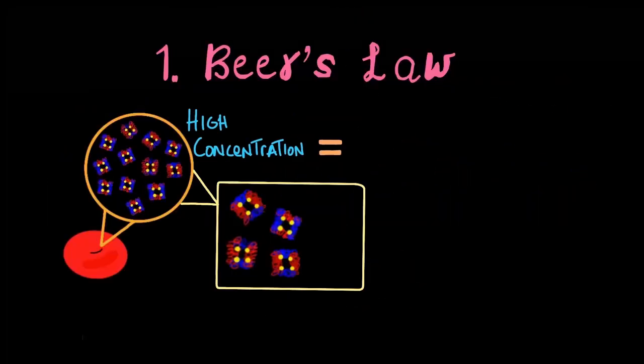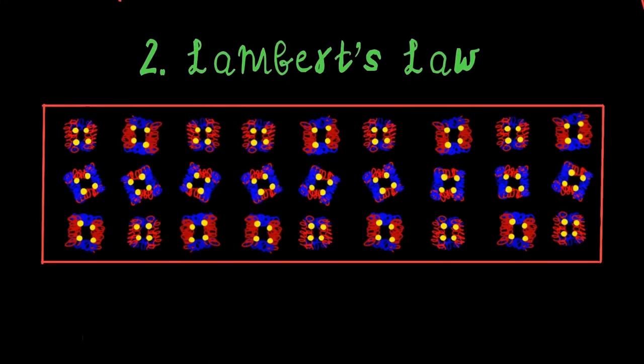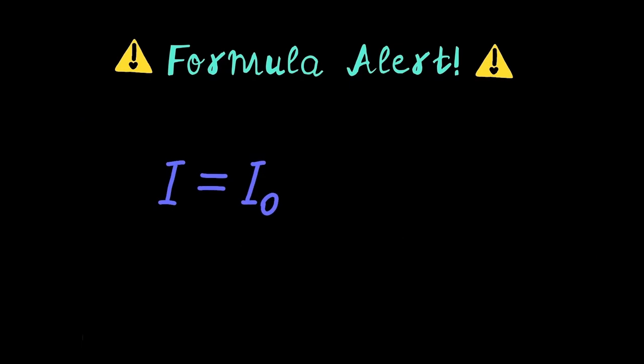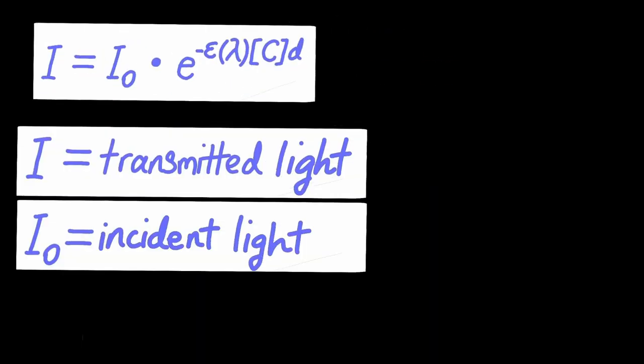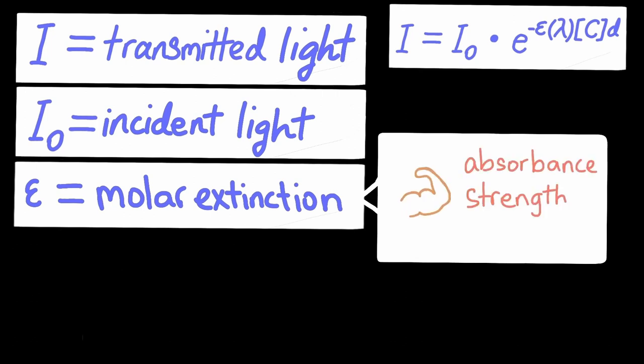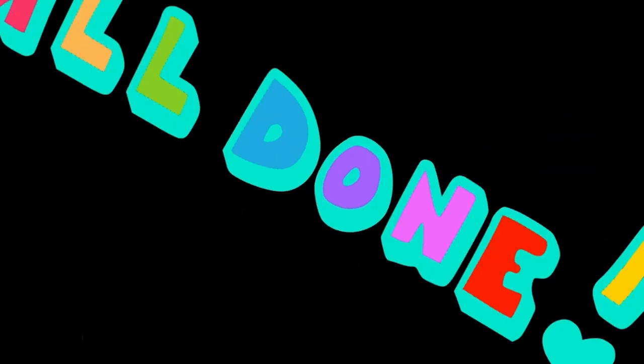But we still have to consider two concepts: Beer-Lambert's law. In Beer's law, high hemoglobin concentrations allow more absorbance. Lambert's law says longer paths create more contact with hemoglobin. Formula alert. This all relates transmitted light with incident light, molar extinction or the absorbent strength of a substance, wavelength frequency, substance concentration and distance. Though we're not quite finished.